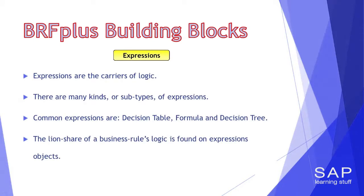The carriers of the business logic are objects called expressions, and they come in all sorts of sizes and colors, meaning there exist many subtypes of the expression object type. Among the more common ones are decision tables, decision trees, formulas, and case expressions. Each expression subtype behaves in a completely different way, so we will dedicate specific lectures to each one. Just remember — it is expression objects that encapsulate the majority of the business logic. The other stuff is there for support.